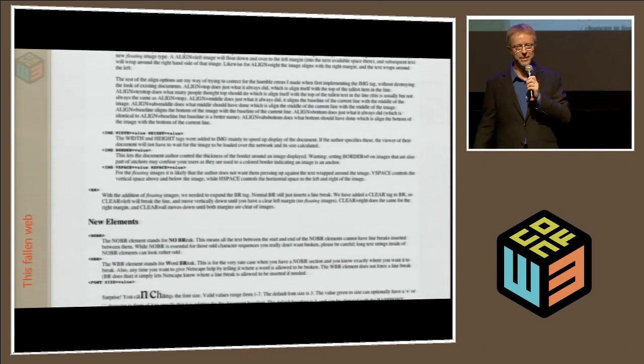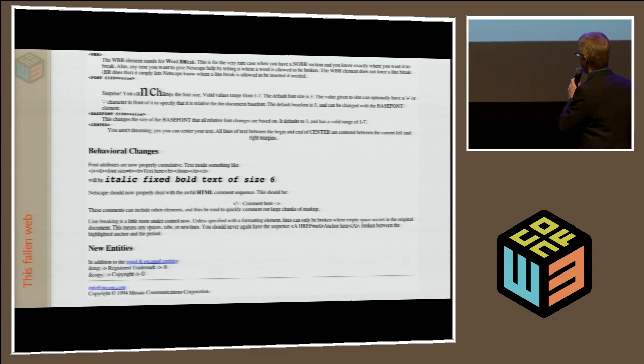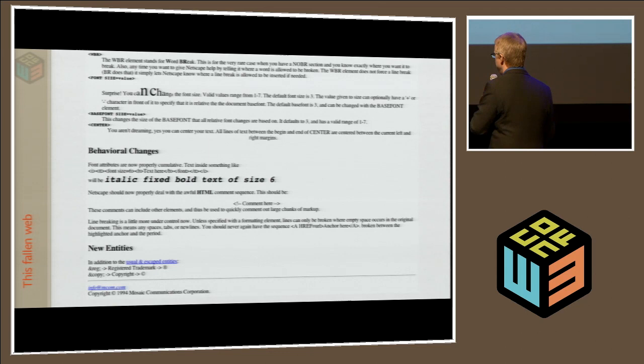And as you go through this document, they have all kinds of fun stuff — ordered lists having ABC, IMG is probably the most extended tag, you can align it left and right and set all sizes and borders. And down at the bottom they say things like, 'Netscape should now properly deal with the awful HTML comment sequence.' I don't know what's so awful about the HTML comment sequence, but apparently they didn't like it. Maybe it wasn't presentational enough.